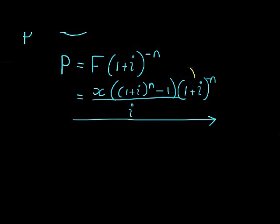Let me show you how. All I'm going to do is to distribute this bracket inside this top bracket. So that gives me an X. I've got (1+i)^n that is now multiplied with this bracket (1+i)^(-n).